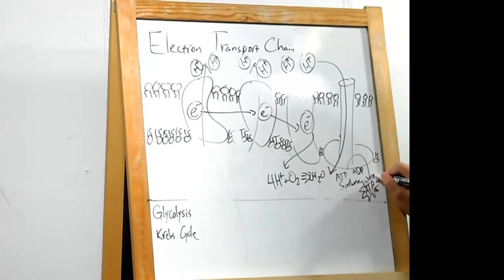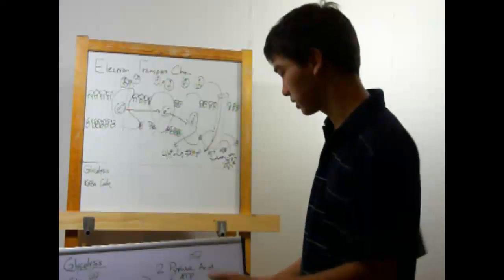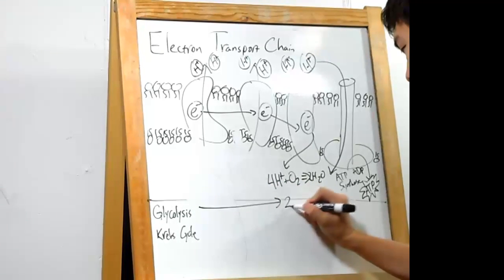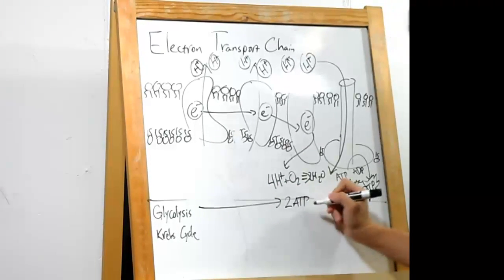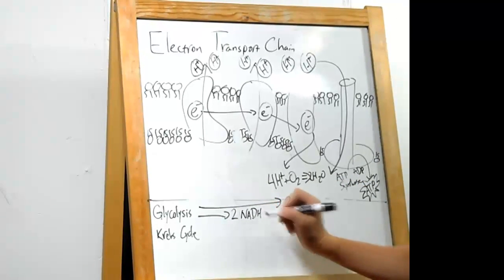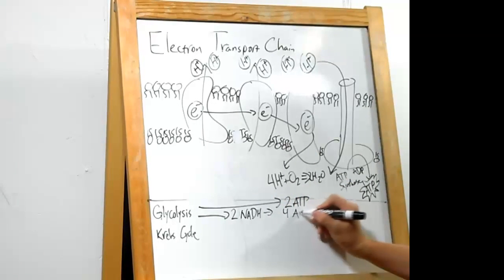And this is all made out of the energy that we had stored up in NADH and FADH. And now we can start looking at the totals. Glycolysis produced two ATP right off the bat. It also produced two NADH.